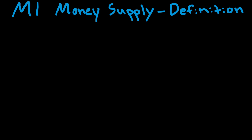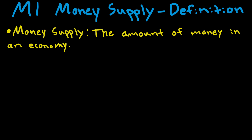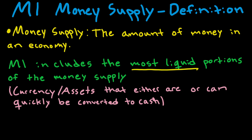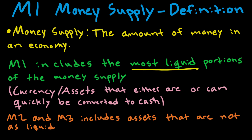First, let's take a short look at money supply. Money supply is the amount of money in an economy. The M1 money supply is a part of the whole money supply and includes the most liquid portions — currency and assets that either are, or can quickly be, converted to cash. There are broader measures such as M2 and M3, which include M1 but also include assets that are not as liquid as those found in M1.